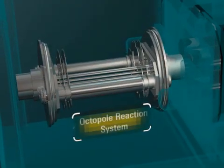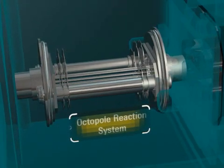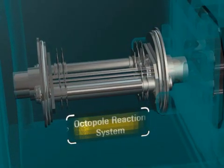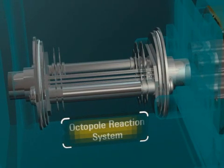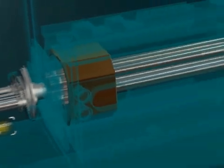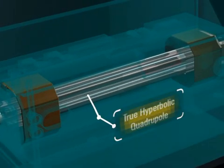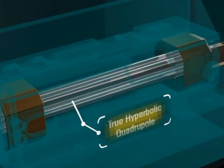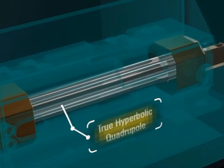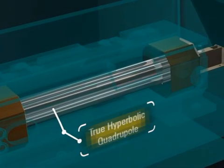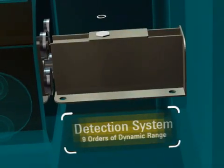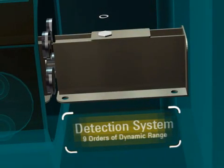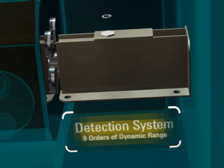The Octopole Reaction System is comprised of an octopole ion guide inside a pressurized reaction cell, and can be operated in both collision and reaction modes for the removal of polyatomic spectral interferences. Mass filtering is performed by a high-frequency quadrupole with unique true hyperbolic cross-sectional rods for superior abundance, sensitivity, and peak separation. The advanced detection system provides nine orders of linear dynamic range, from parts per trillion to hundreds of parts per million.